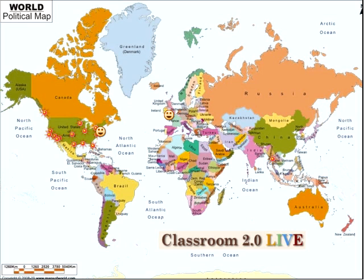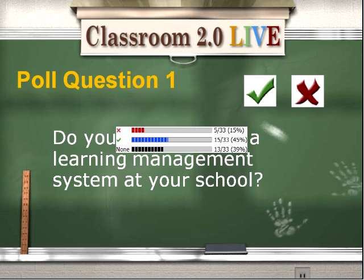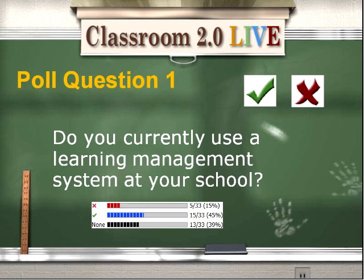We're finished with that fun. Let's go to the poll questions. Go to the top of the participants window, the icon on the right. Answer the question: do you currently use a learning management system at your school? Green check if you do and red X if you don't. I'm going to publish responses to the whiteboard. Most people in the session today have done some work with learning management systems.